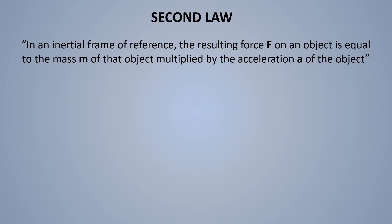The second law states that in an inertial frame of reference, the resulting force F on an object is equal to the mass m of that object multiplied by the acceleration a of the object. So we can write this famous formula. This can also be written like this, meaning that the rate of change of momentum of a body is directly proportional to the force applied. This change in momentum takes place in the direction of the applied force.